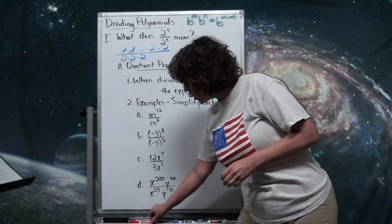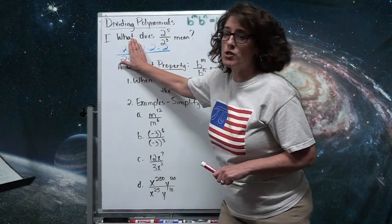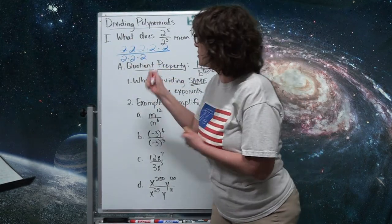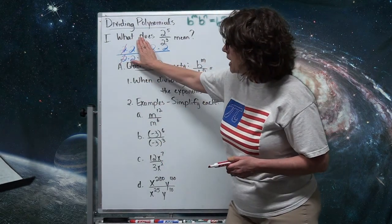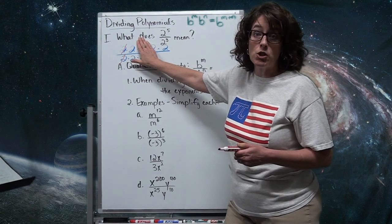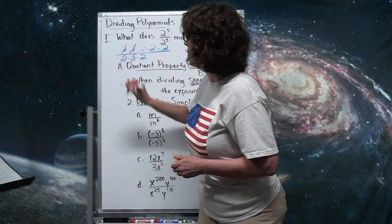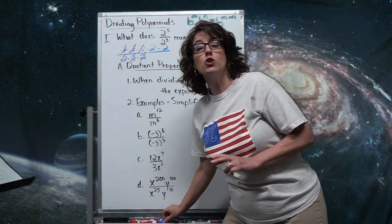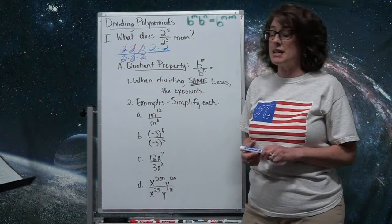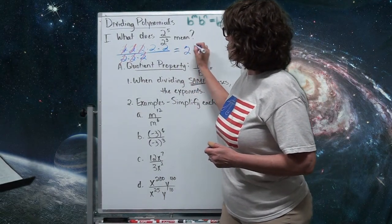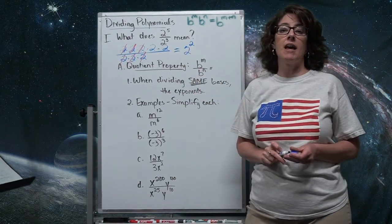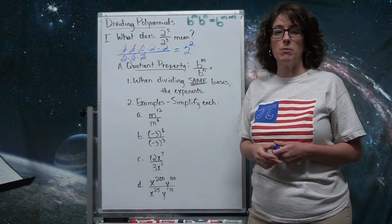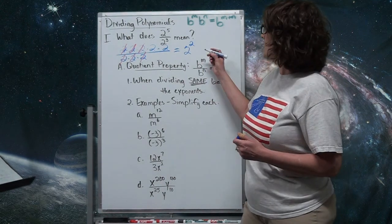What happens when we divide 2 by 2? It equals 1, so they cancel out. The same thing happens for each matching pair — they cancel to be 1. I'm left with two 2s being multiplied together, which is 2 to the 2nd power, or 4.